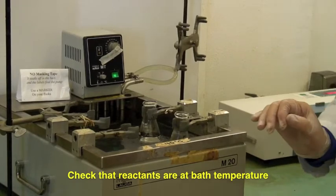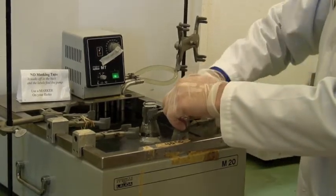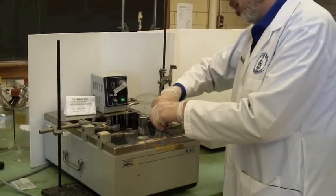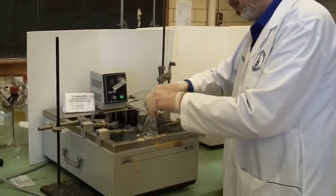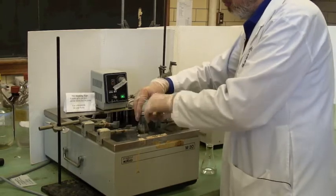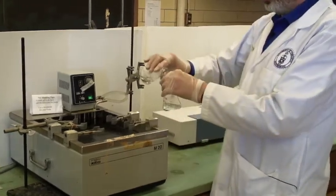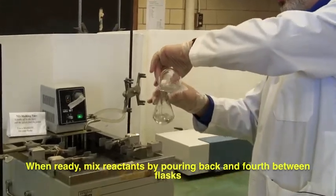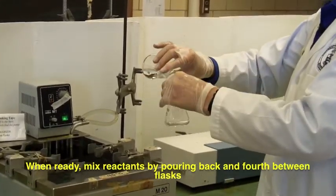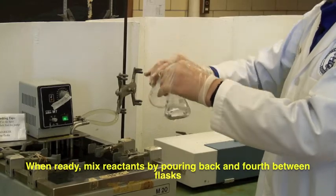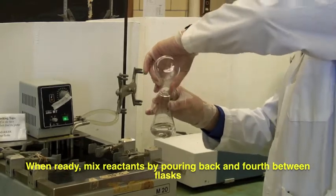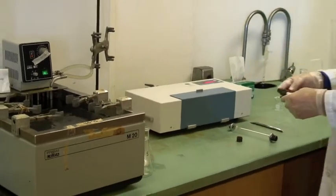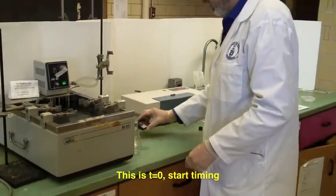So we're now ready to start the reaction. And we do this by opening the clamps to get the flasks out. And then when you're ready, pour one into the other. And you pour them back and forth between the flasks three or four times to get complete mixing. Take your stopwatch and start the reaction timing.